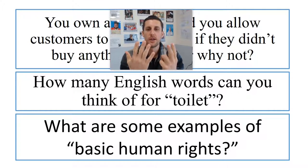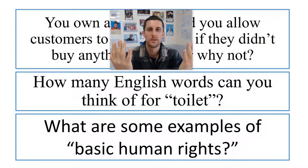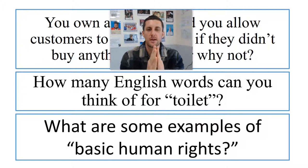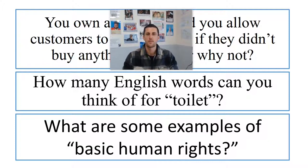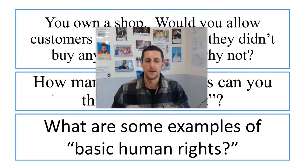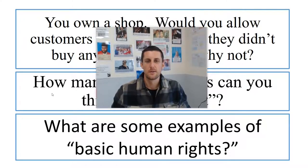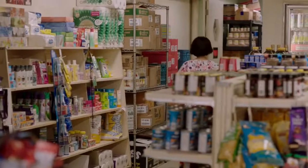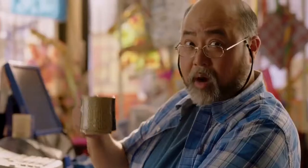The shitter... anyways, that's quite a few. I think that most people could think of about four or five at least. And finally, what are some examples of basic human rights? Washroom is a basic human right. Everyone needs a washroom.